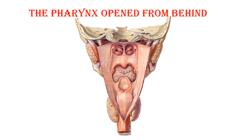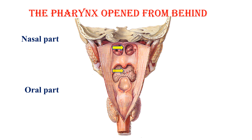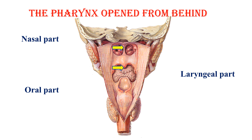Now if we look at the pharynx from behind, we can see the nasal part over here, the oral part — that is the back of the tongue — and these are the nasal conchae, the nasal septum, and that is the uvula here. The lowest part is the laryngeal part, behind the larynx. So these are the parts as seen from behind.